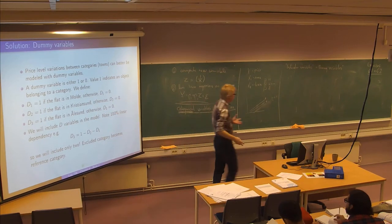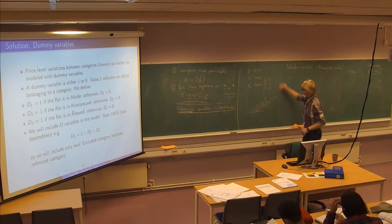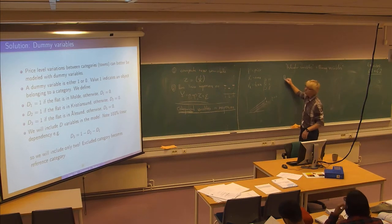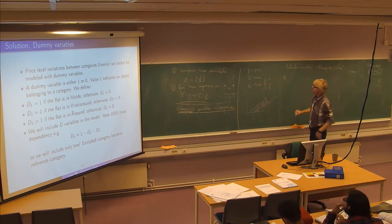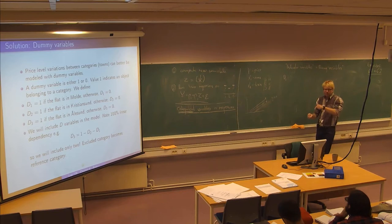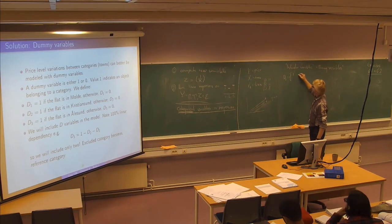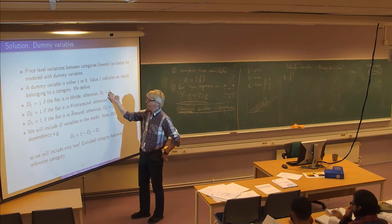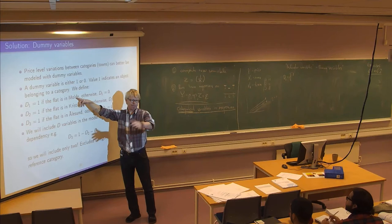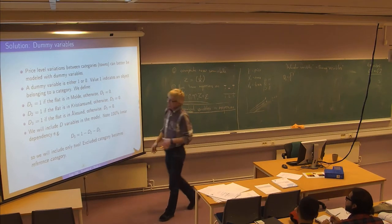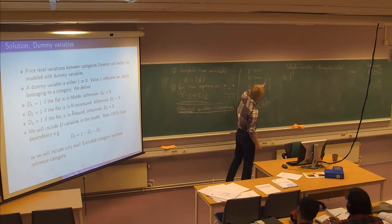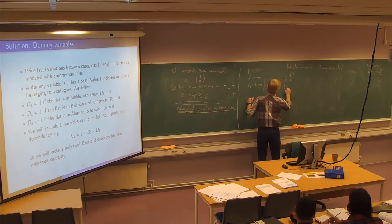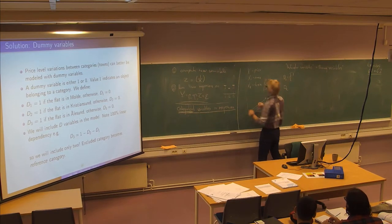When we have a categorical variable, I can define dummy variables — for example, D1 for Molde, which is going to be one for all the flats that are in Molde and zero otherwise. So it indicates whether the flat is in Molde or not — that's why we sometimes call it an indicator variable. Then you do the same for each value: D2 indicates Kristiansund, and D3 indicates Ålesund.